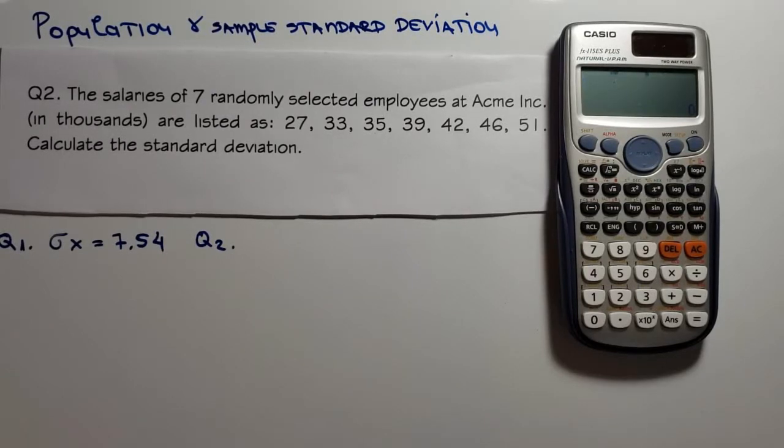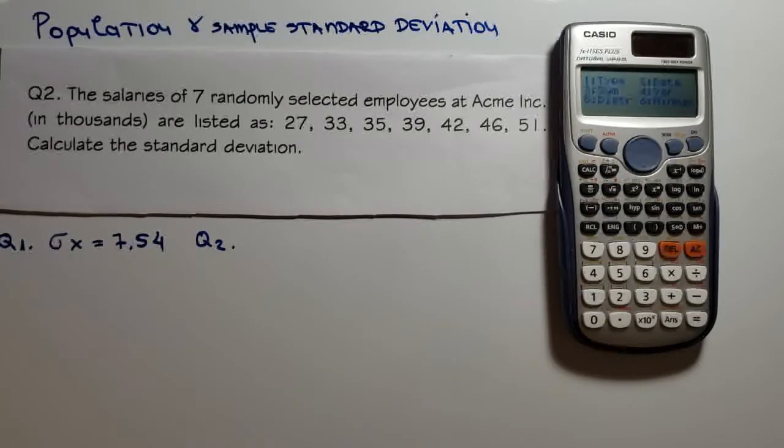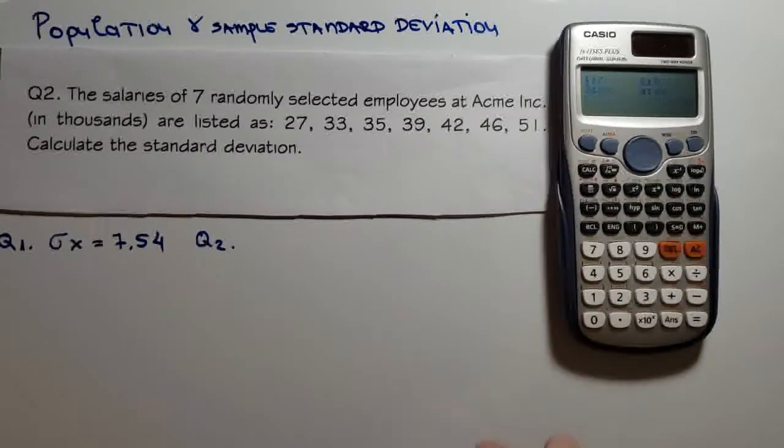So again, I'll press the shift button here. I'll choose 1 for stat and I will choose 4 for variation.